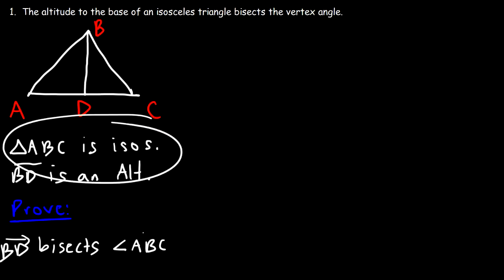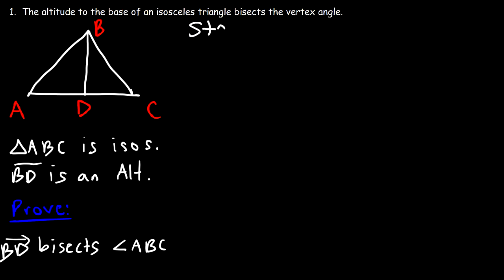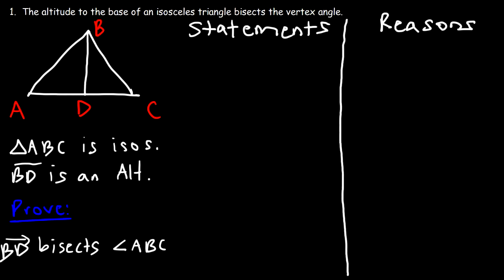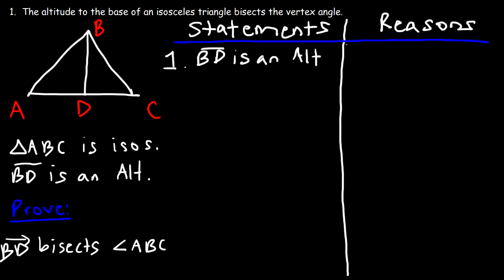Now that we've drawn the diagram, written the given, and written what we need to prove, we can do this with a two-column proof. Let's begin with statements and reasons. The first statement I'm going to make is that BD is an altitude, and we know that's given.